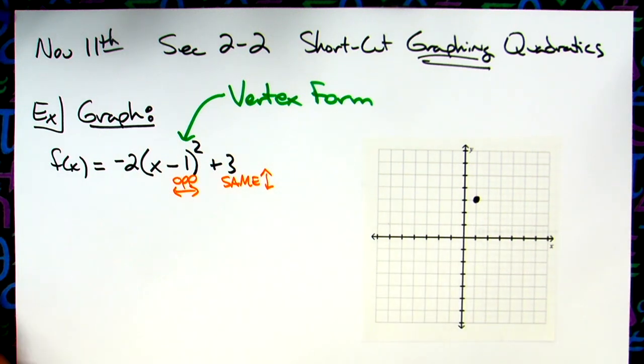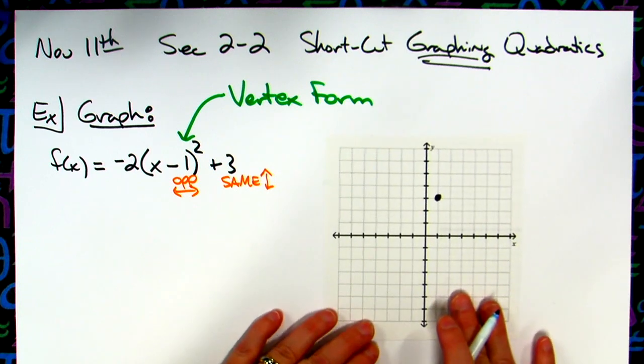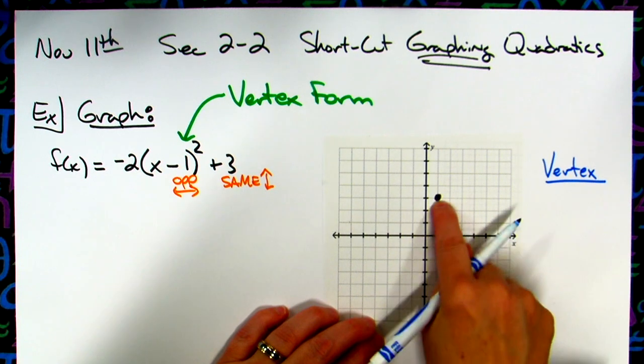If I wanted then to identify the vertex, I could. Let's move this over just a little bit here. So that means my vertex is sitting at one, three.